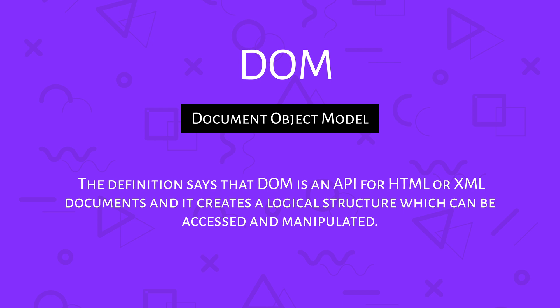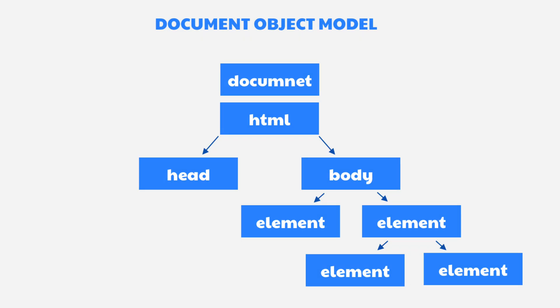Every browser has its global object called window. Inside the window there are different properties and methods. One of the properties in the window object is document, where we may find a lot of properties and methods which can be used to access DOM elements and interact with them. Let's take a look at the screen where you can see the structure of the Document Object Model for a simple HTML.